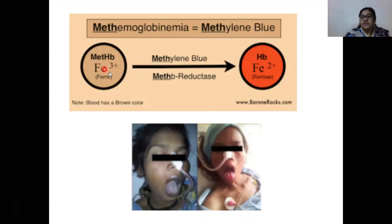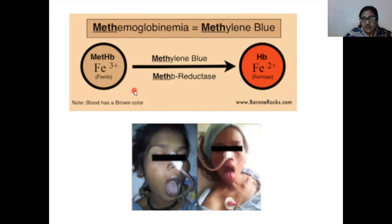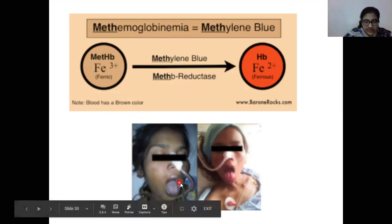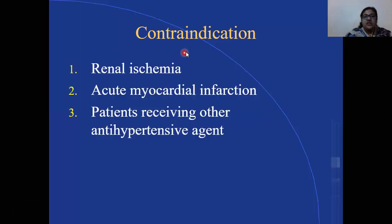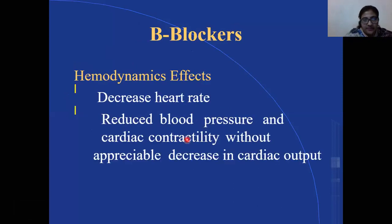In the Fe³⁺ state, oxygen cannot be properly bound by hemoglobin, and the blood becomes darker — a brownish-purple color. This is visible in affected patients. Contraindications include renal ischemia, acute myocardial infarction, and patients already receiving other antihypertensive agents.